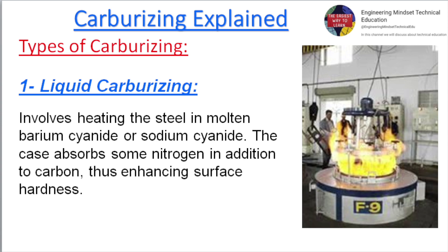Types of carburizing. One: liquid carburizing, which involves heating the steel in molten barium cyanide or sodium cyanide. The case absorbs some nitrogen in addition to carbon, thus enhancing surface hardness.